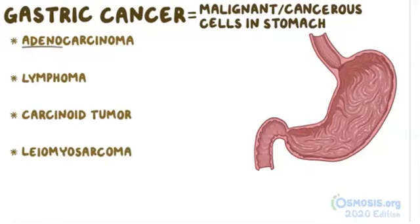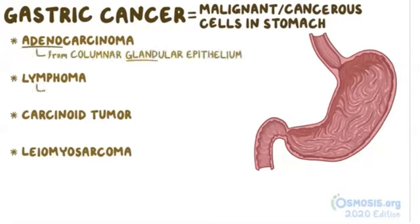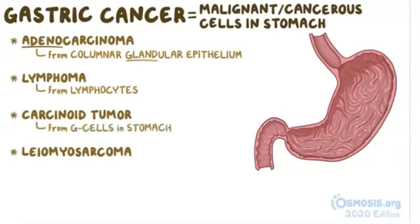Adeno means gland, so adenocarcinoma arises from columnar glandular epithelium. Lymphoma arises from lymphocytes. Carcinoid tumor is originated in the G cells of the stomach, and leiomyosarcoma arises from smooth muscle cells from the gastric wall.